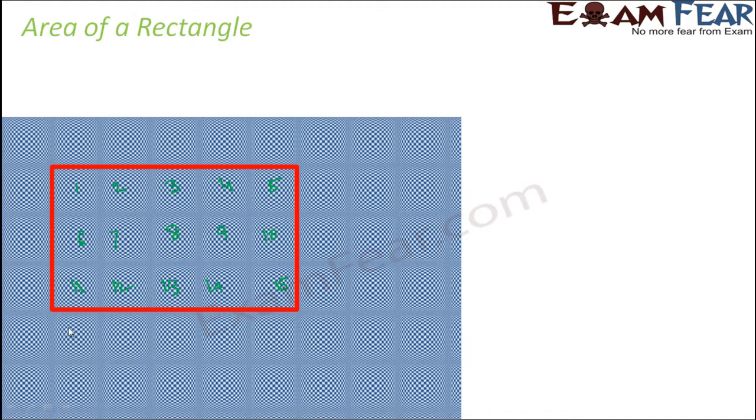Now how many squares do you have along the length of the rectangle? So this is the length of the rectangle, you have 1, 2, 3, 4, 5 squares. So there are 5 squares along the length of the rectangle and how many squares do you have along the breadth? You have 3 squares.